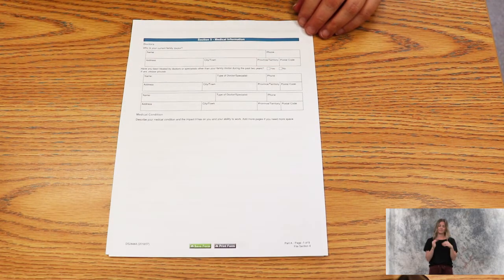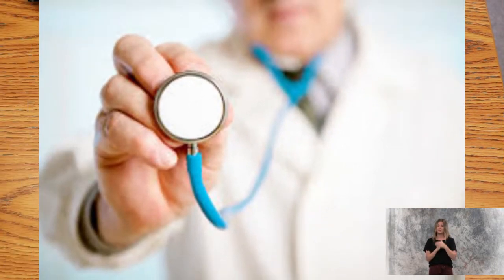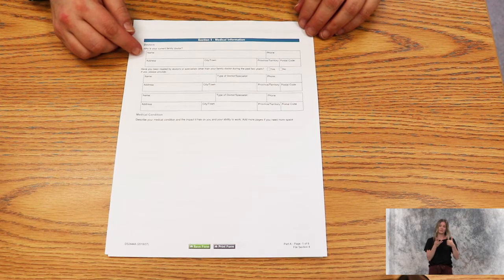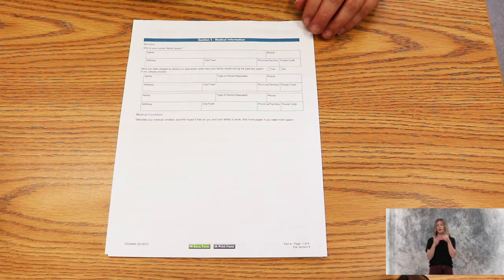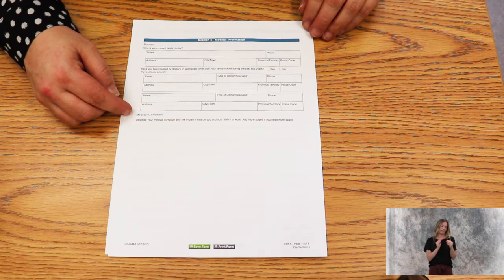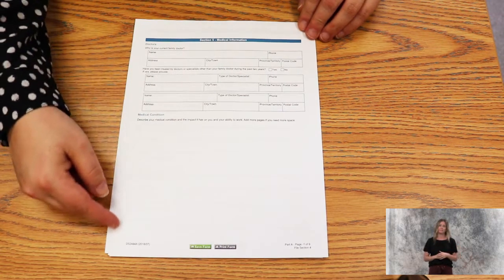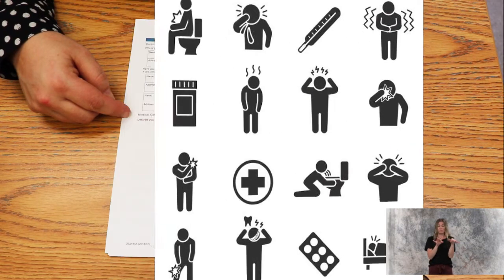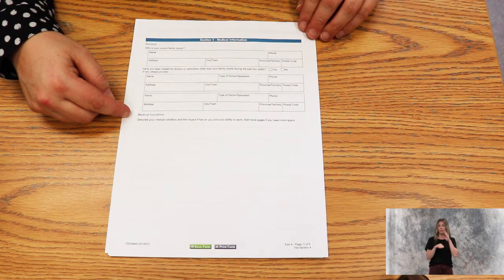Section five is the medical information. You will need to have your doctor's contact information: name, phone number, address, and postal code. Please supply all the doctors that you've seen in regards to your medical condition, including any specialists. You can add an additional page onto this if you need. This section here is to describe your medical condition and the impact it has on your ability to work. You just write in your own words what is going on and how it affects your ability to work.